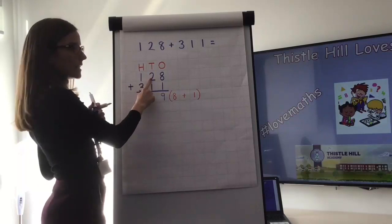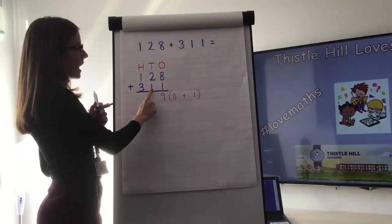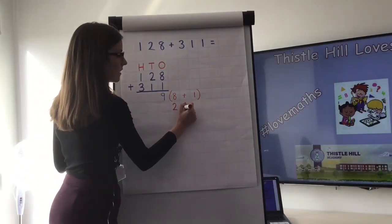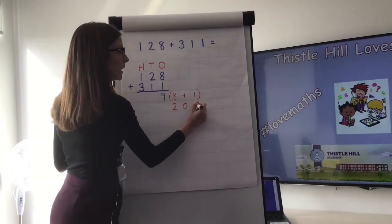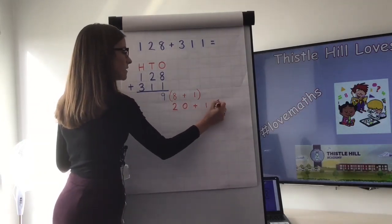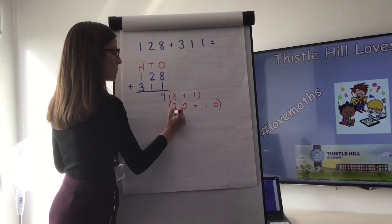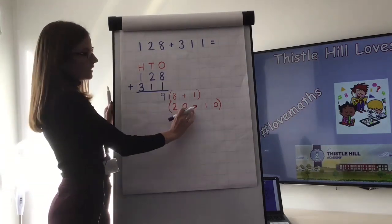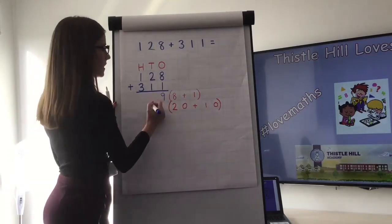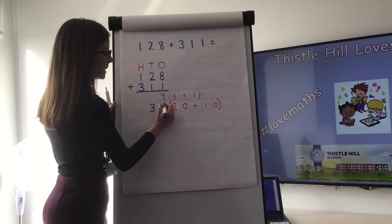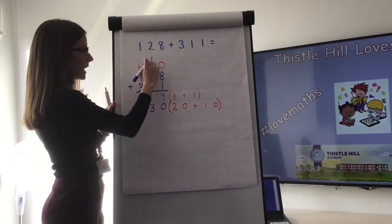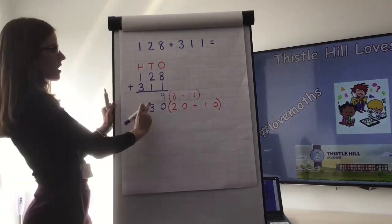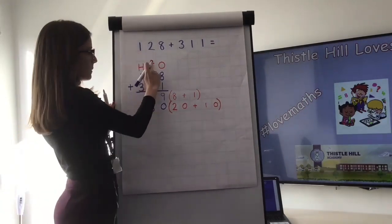Now we move to our tens column. We've got 20 and we're adding 10 to it, so we write 20 add 10 in brackets. We know that 20 add 10 is 30, and I need to make sure I write my answer so it lines up with my tens and ones column. 30 is three tens, so we place it in the tens column.